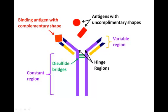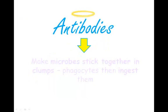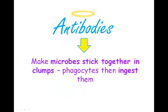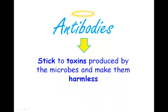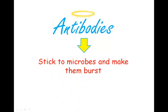So how do antibodies actually work? Antibodies can make microbes stick together in clumps and then the phagocytes ingest them. Some antibodies stick to microbes to make it easier for phagocytes to find them. Some even stick to toxins produced by the microbes and make them harmless. Some antibodies stick to microbes and make them burst.